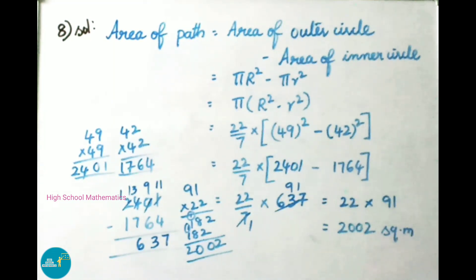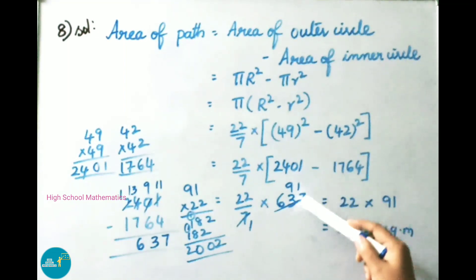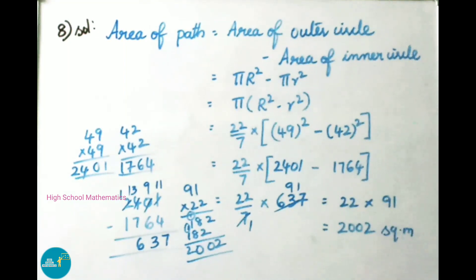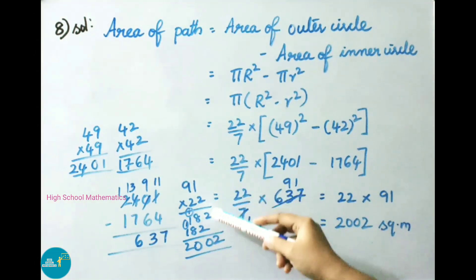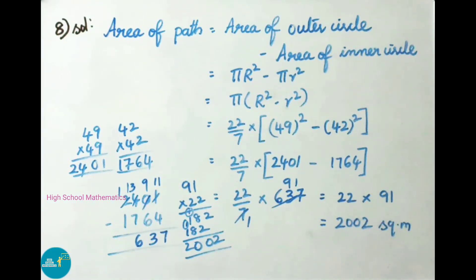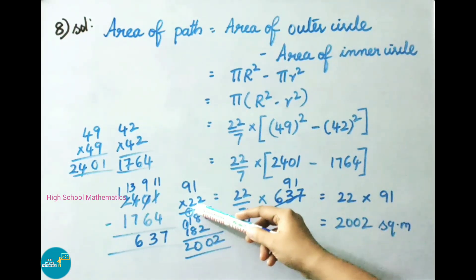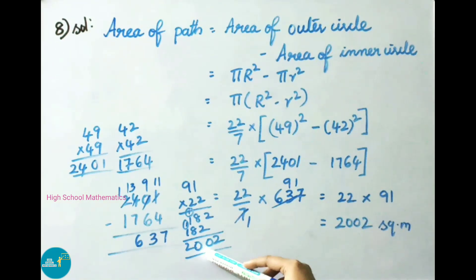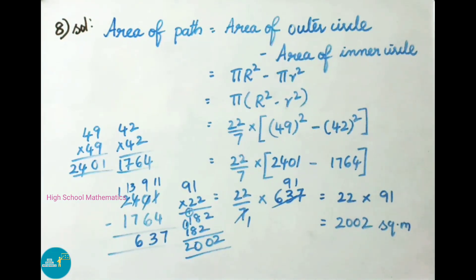Now we perform cancellation: 22 by 7 into 637. Since 637 divided by 7 is 91, we get 22 into 91. Multiplying: 22 into 91 equals 2002. Therefore the area of the path is 2002 square meters.